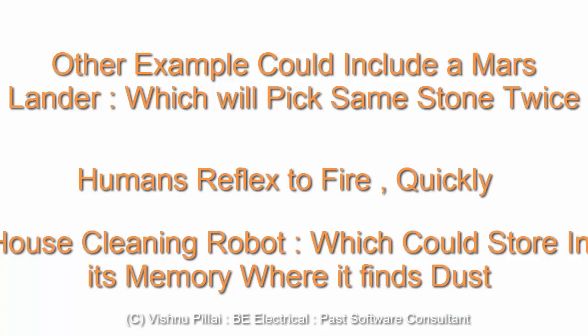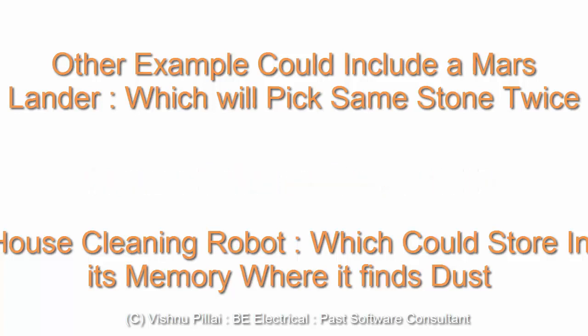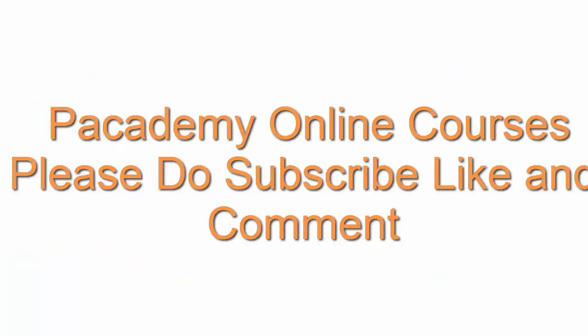Another example is a house cleaning robot. A more advanced robot could learn where it finds dust daily — for instance, it could store in memory that dust is found every week under the sofa, and next time directly search there. This kind of memory-based behavior cannot be achieved by a simple reflex agent, which works only on if-condition rules based on information gained through sensors.